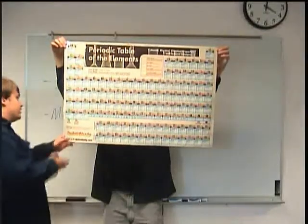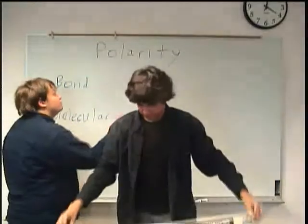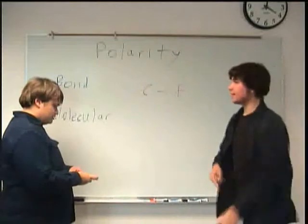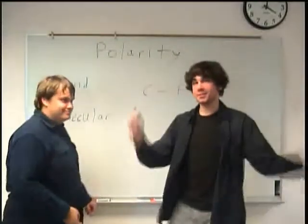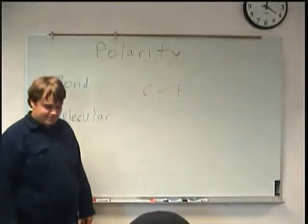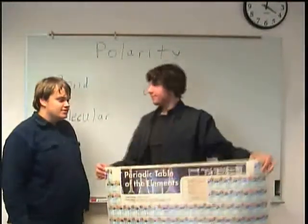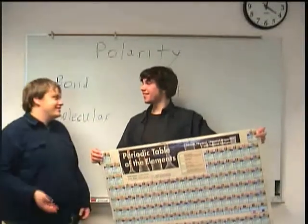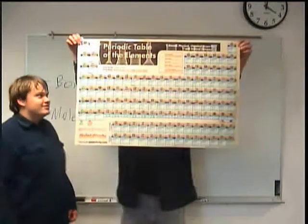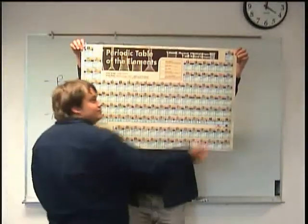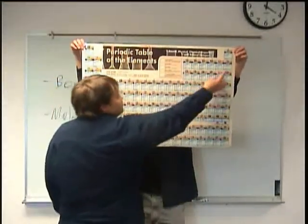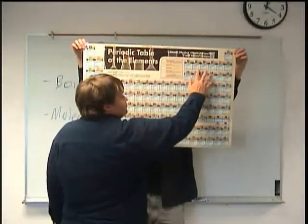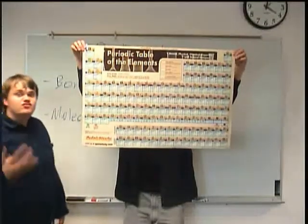For example, let's try the bond between carbon and fluorine. So as you can see, here's carbon, and then here's fluorine. Now carbon is one, two, three spaces away from the fluorine.